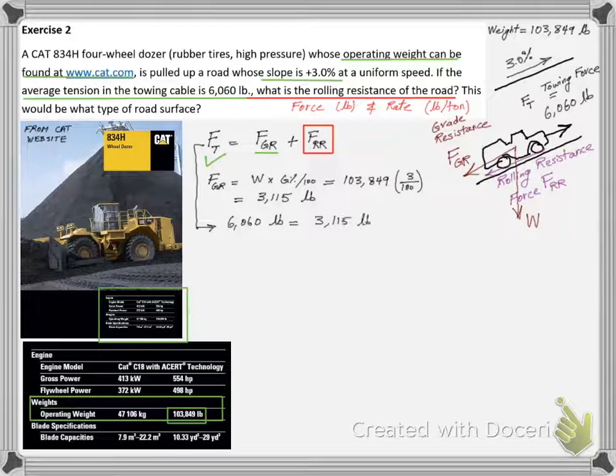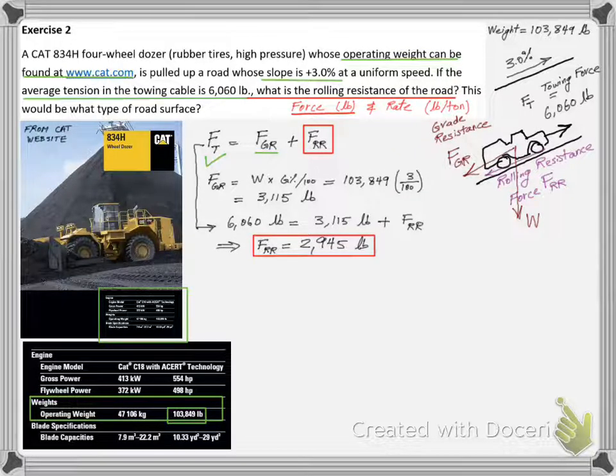We go back to the towing force equilibrium equation and we are finally able to calculate FRR to be 2,945 pounds.